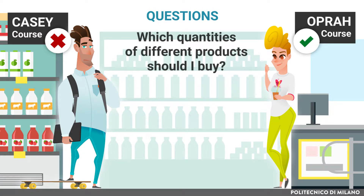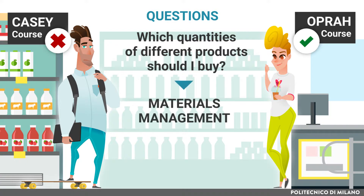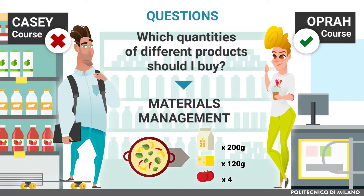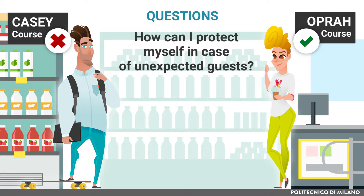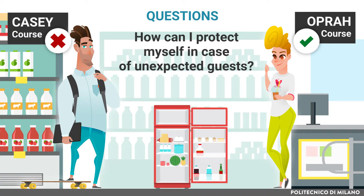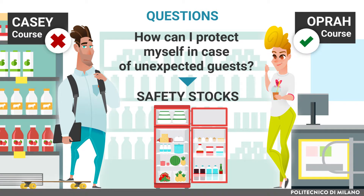Which quantities of different products should I buy? To properly answer this question, they have to correctly manage materials, considering the requirements related to different dishes they have to prepare. How can I protect myself in case of unexpected guests? In order to face this risk, they have to size safety stock in their fridge.